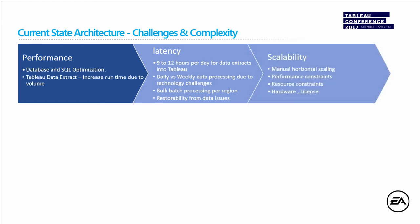We also have scalability issues. On the relational database, we don't have elastic horizontal clustering — we need to always do manual horizontal scaling. We have a lot of performance constraints we're dealing with. Along with resource constraints — if there is a data issue, I need to get everyone together: storage teams, networking teams, database administration teams — everyone should be aligned to resolve the problem. And on hardware and licensing, the more you have, the more licensing costs in the relational database model.